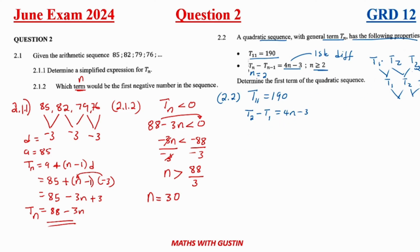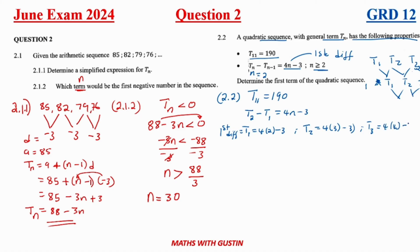We can now calculate the first differences. Using the expression 4n minus 3: t1 of the first difference is 4(2) minus 3 equals 5; t2 is 4(3) minus 3 equals 9; t3 is 4(4) minus 3 equals 13.